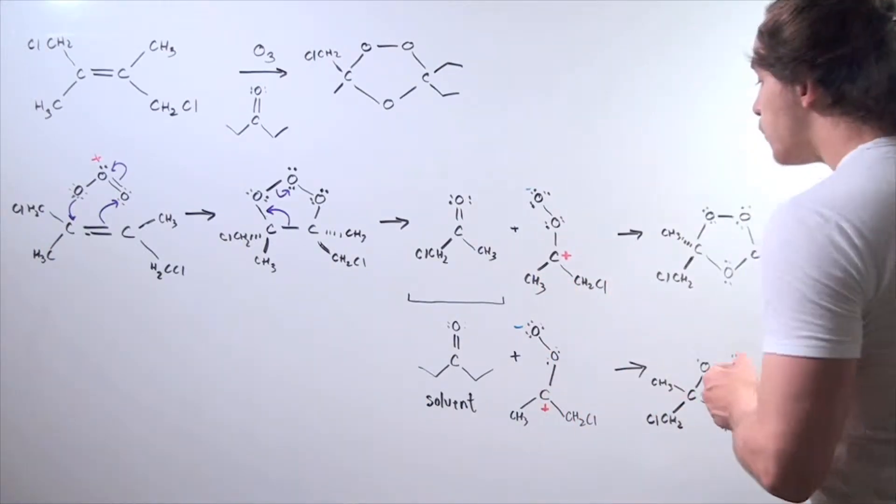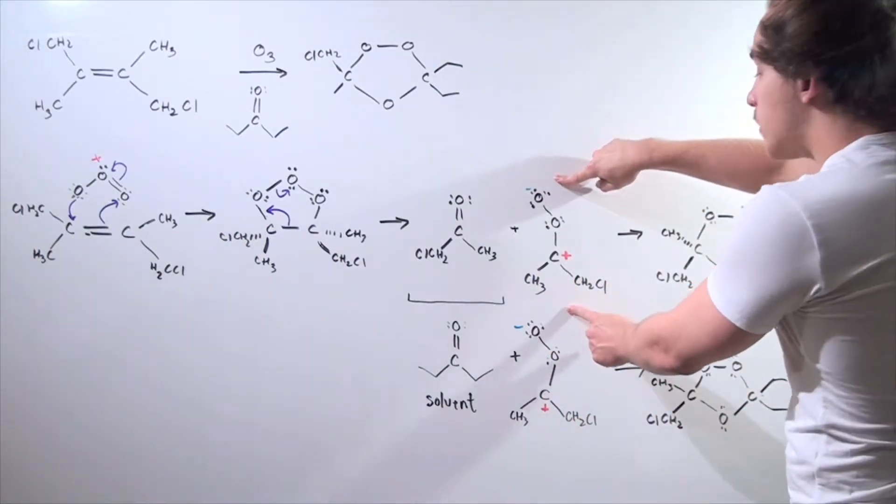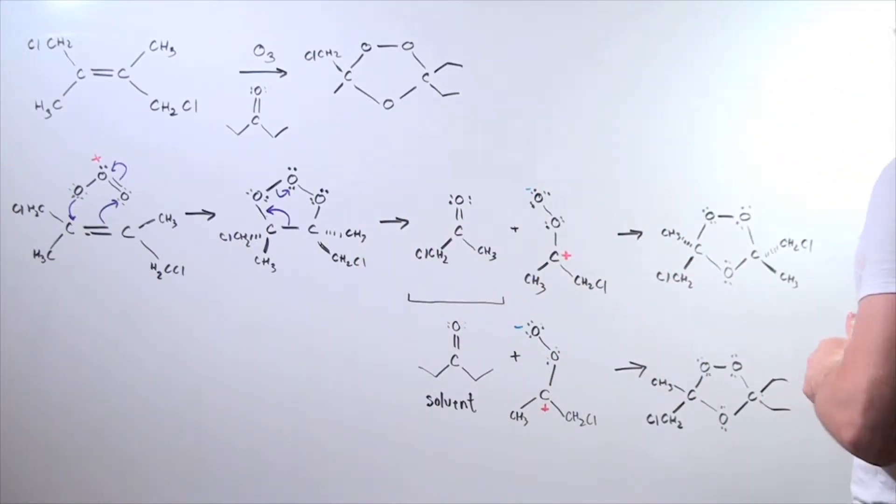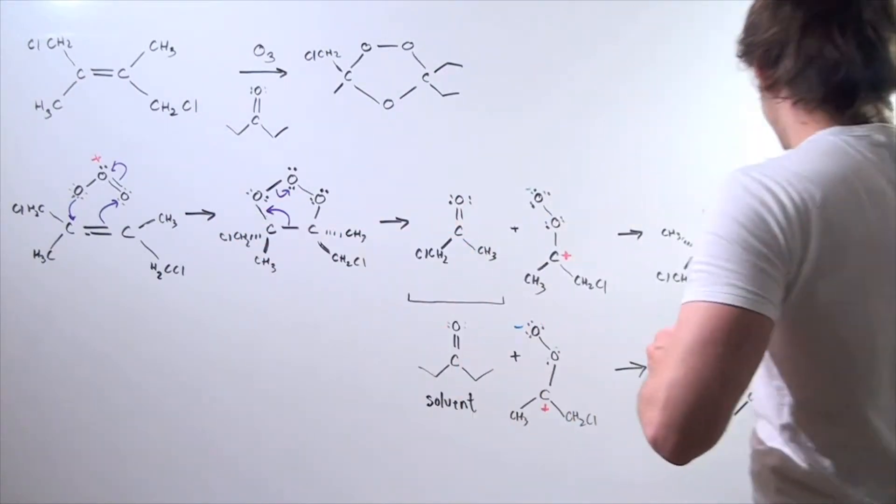In the final step, we have this carbonyl oxide flipping. We have a forward 1,3-dipolar reaction taking place, and we form the following product. This is the final ozonide formed in this three-step mechanism.